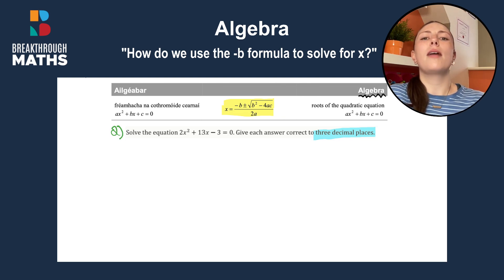OK, so how do we know we have to use minus b formula here? Well, we're asked to solve and solve always means you need to find x. And also we have an x squared, an x and a number. And when you have an x squared, an x and a number, that's how you find a, b and c.